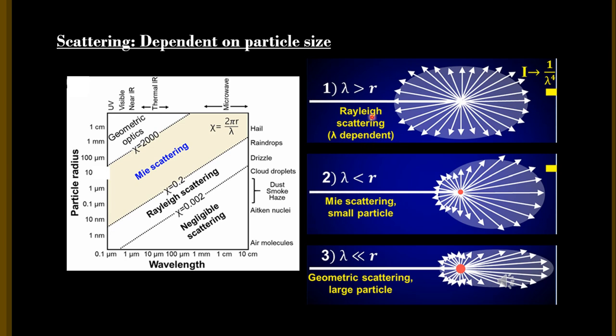This type of scattering is highly isotropic — it scatters light in all directions equally — but it is highly dependent on the wavelength it is interacting with. That is, it is inversely related to the fourth power of the wavelength, meaning the intensity of Rayleigh scattering is inversely dependent on the wavelength. So the smaller the wavelength of light, the more intensely it will be scattered compared to light of a larger wavelength.